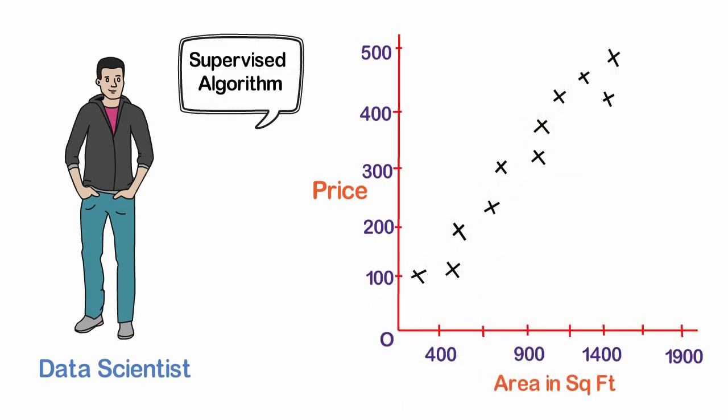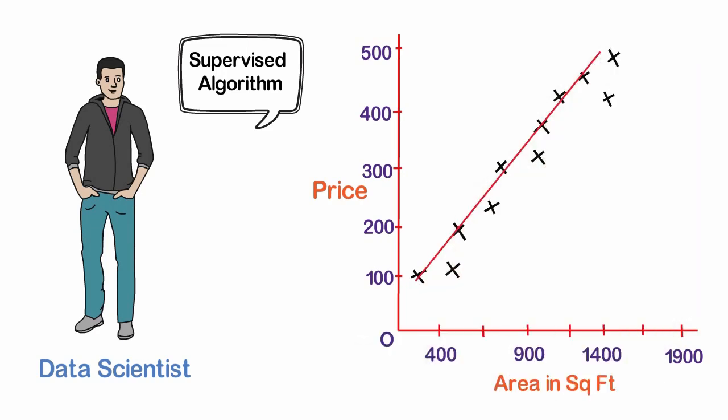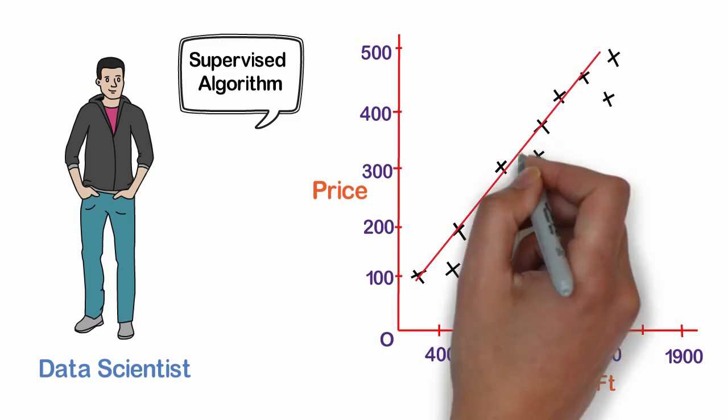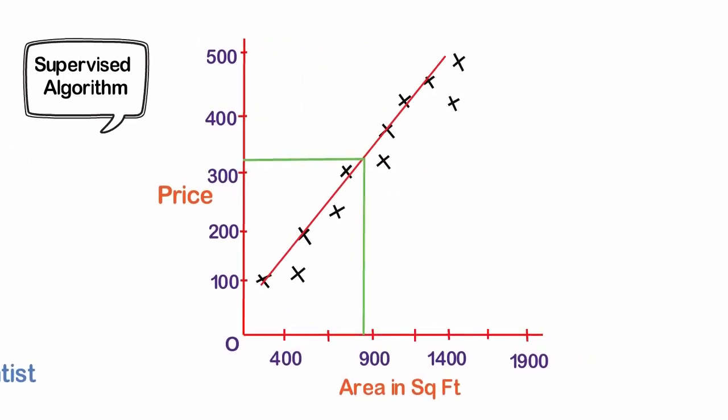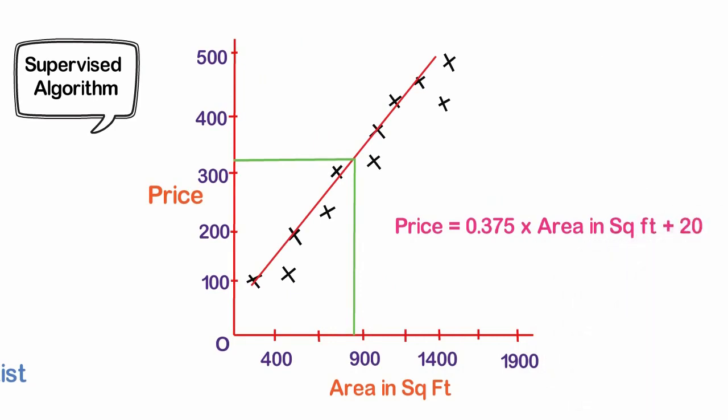When the algorithm is applied to this data, it will learn how the price is varying with respect to change in area. This is represented in the form of a straight line with the following equation: Price equals 0.375 multiplied by area in square feet plus 20. Adi can use this equation of the line to find the price at which he should sell the house.